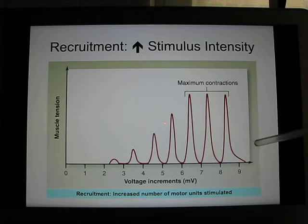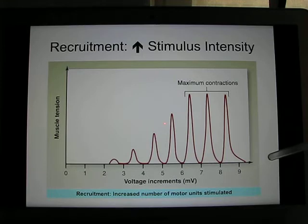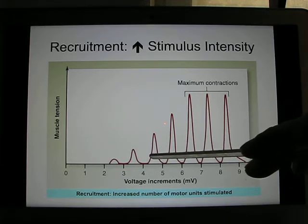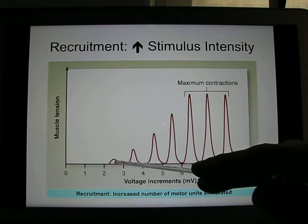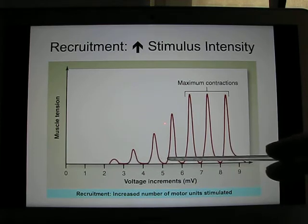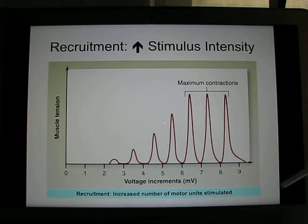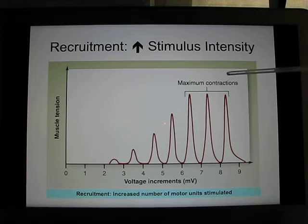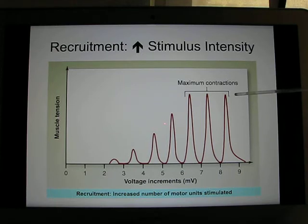You can use the same muscle to move a light object or a heavy object. The difference is recruitment — you recruit different motor units. If you only need to move something light, you recruit only a few motor units and create small tension. If you need to move something heavy, like a 40-pound object, you probably need to recruit all the muscle fibers. The muscle tension and power it can produce is much greater. Each muscle has its maximum contraction when all motor units are being recruited.